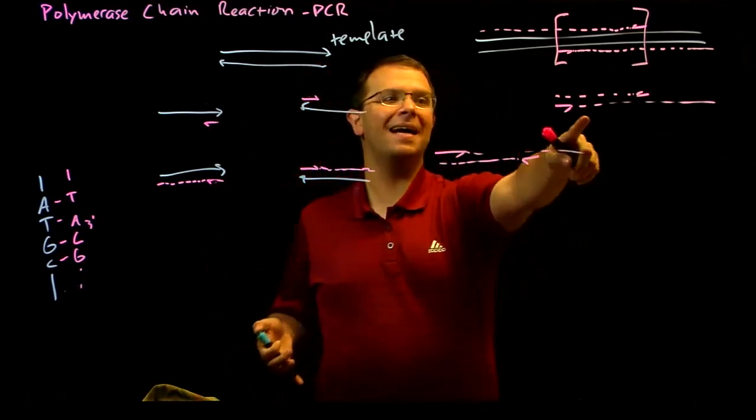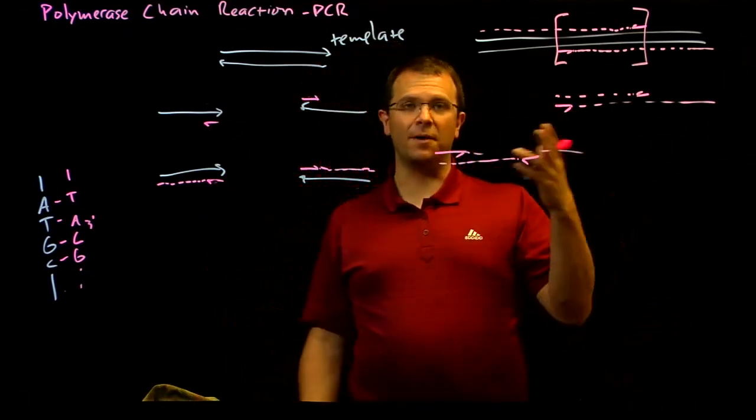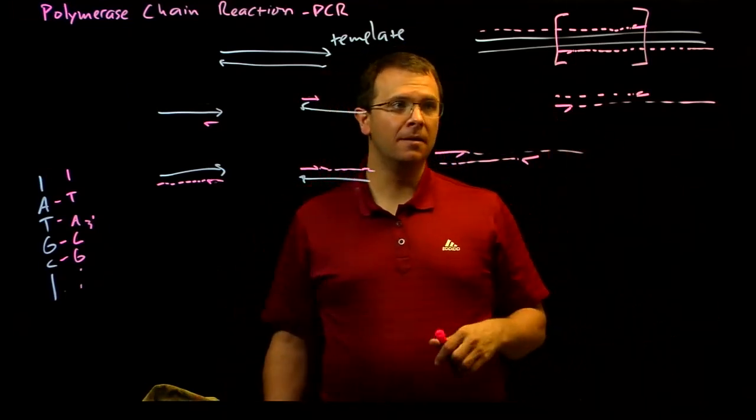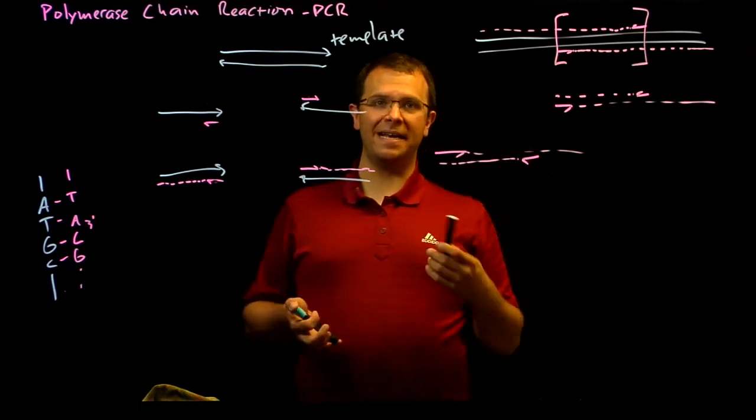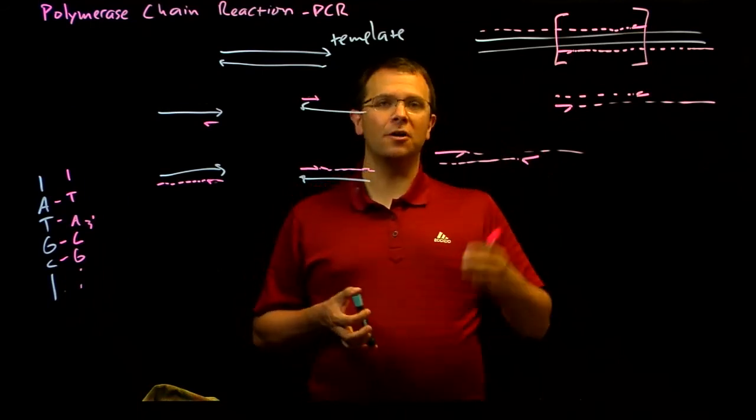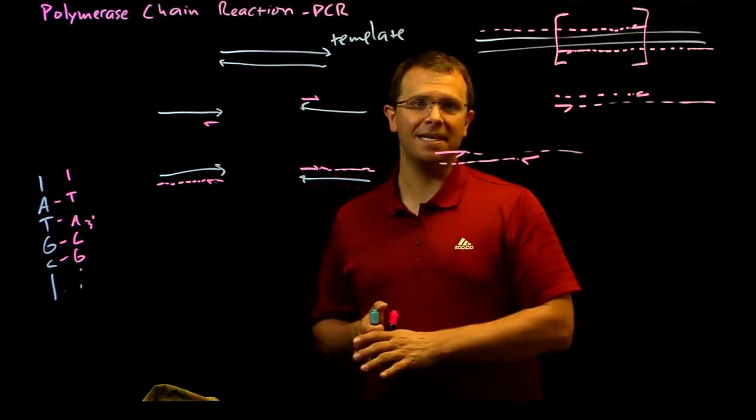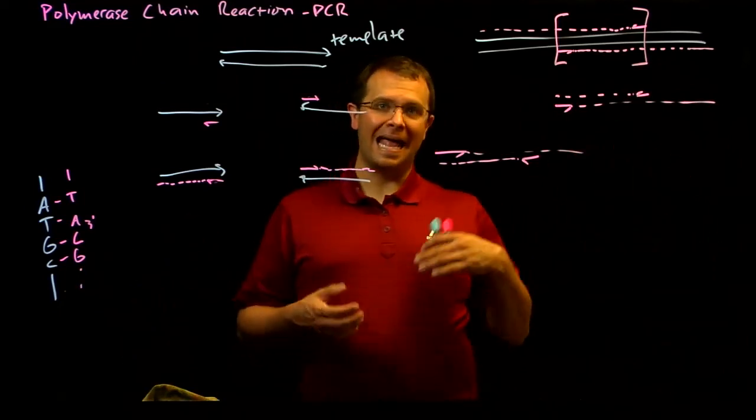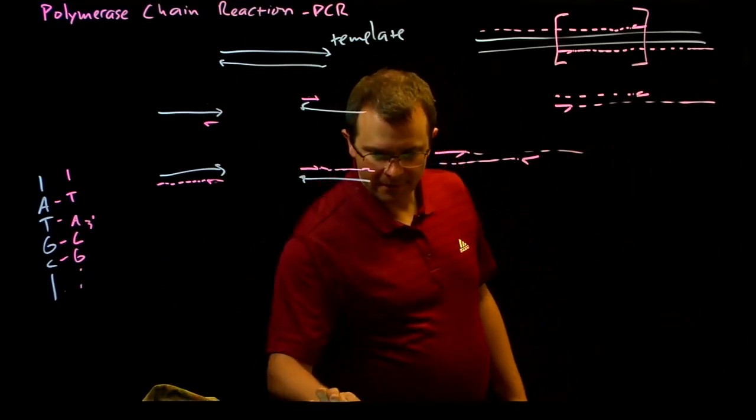I'm just amplifying the region of my template that falls between my two PCR primers. And now, if I want to analyze this DNA further, for example, I want to know its size, I can run it on a gel. I also have enough DNA now to actually determine its entire nucleotide sequence. I can send it off to a contract research lab and ask them to sequence it for me.